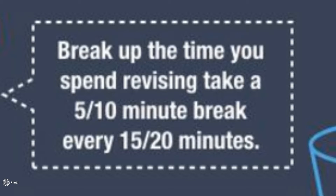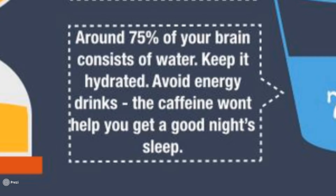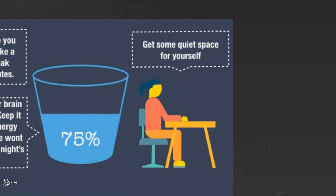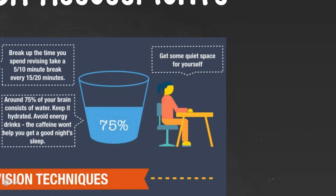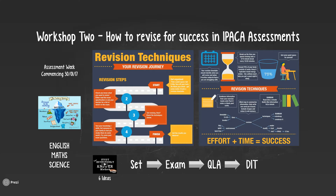Break up the time you spend revising — some people prefer longer sessions, others prefer small 5-10 minute blocks with a subject change or break in between. Find a rhythm that works for you. Around 78% of the brain consists of water — keep it hydrated. We've had a problem historically with energy drinks and the perception that caffeine will help get energy — it won't, and it's not good for your body. And obviously the importance of having a quiet space that's right for them.